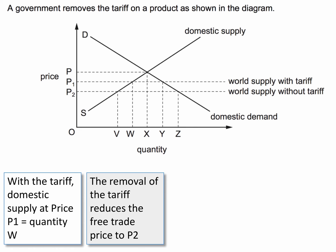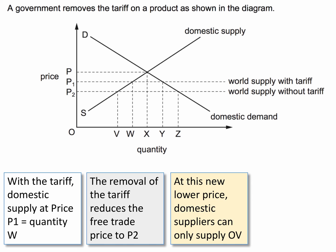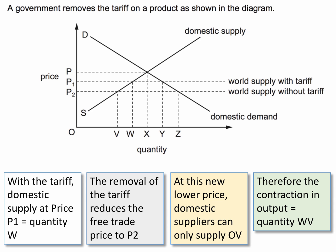When the tariff is removed — and of course this is a removal of a tariff question — the world supply without the tariff is at a lower price. The price is P2. So taking off the tariff, the price falls to P2. We're assuming that domestic suppliers are essentially price takers in the market. So now they'll produce as much as they can at the prevailing price P2, which gives quantity V. At this lower price there's a contraction of output — we're moving down the supply curve from price P1 to price P2. Output has fallen by the distance WV. That is answer A.